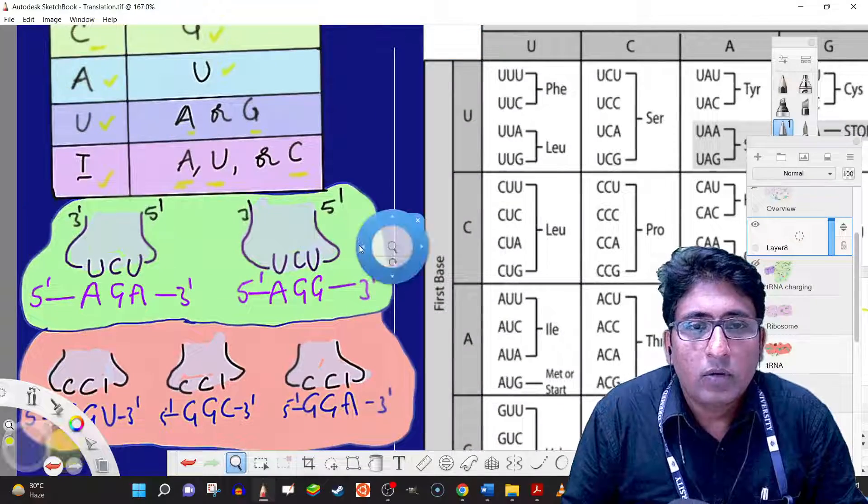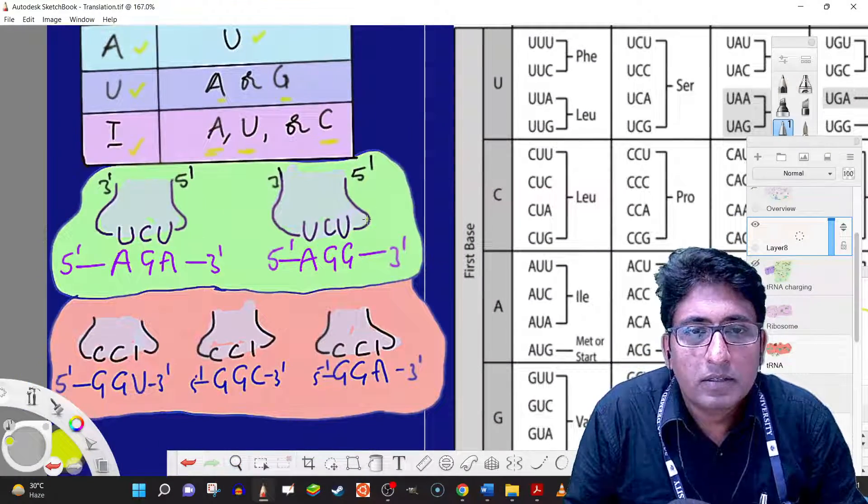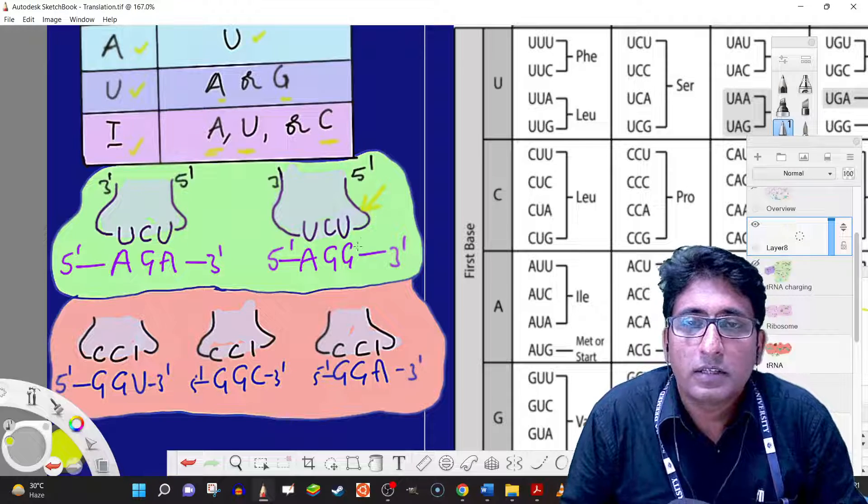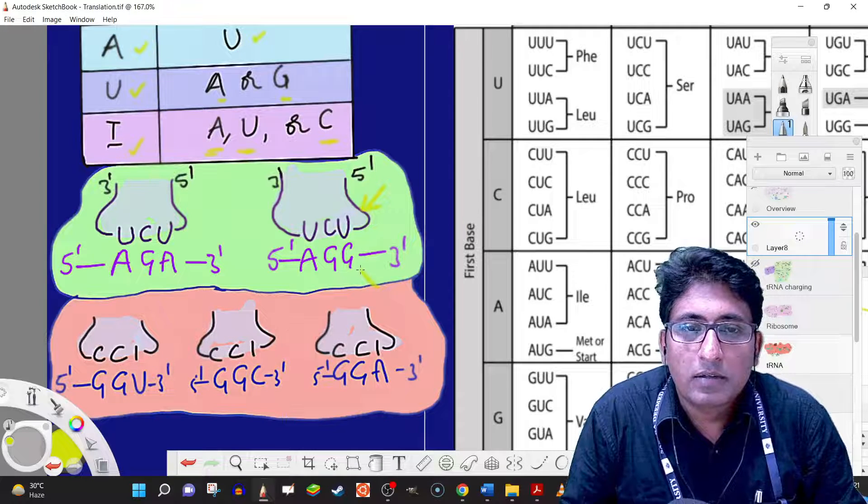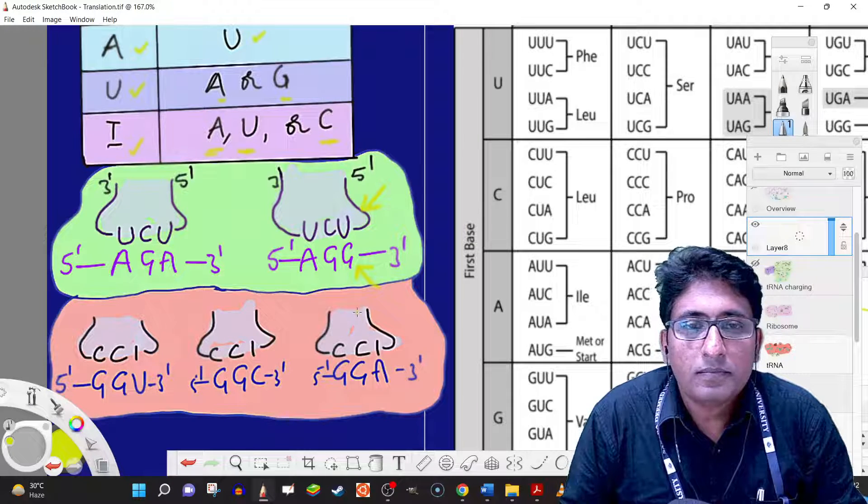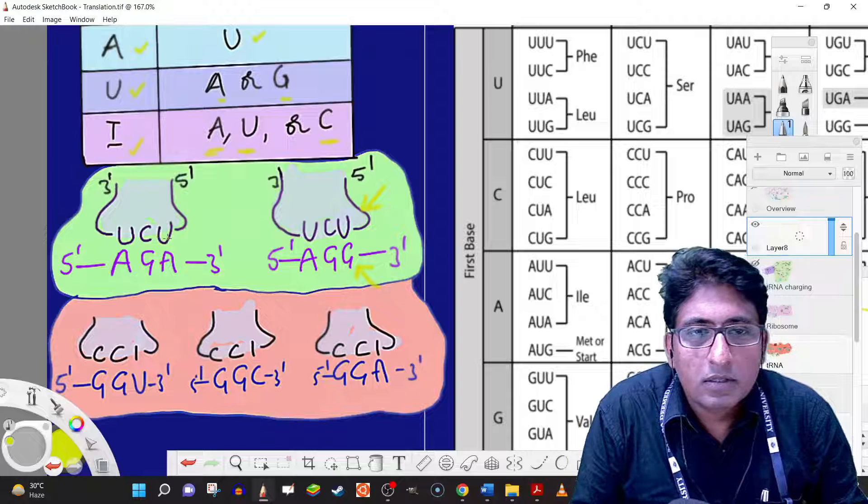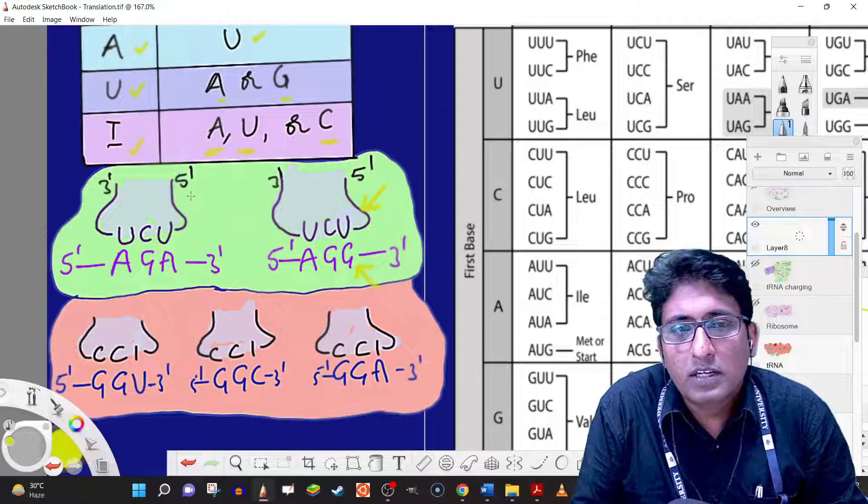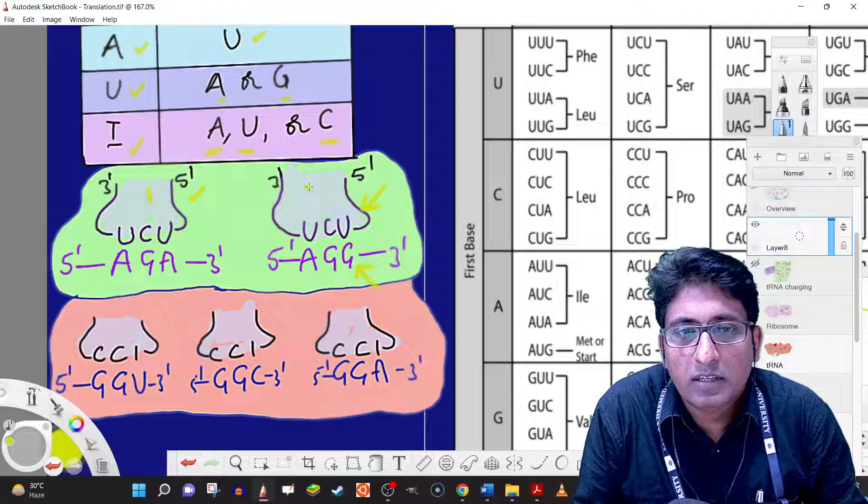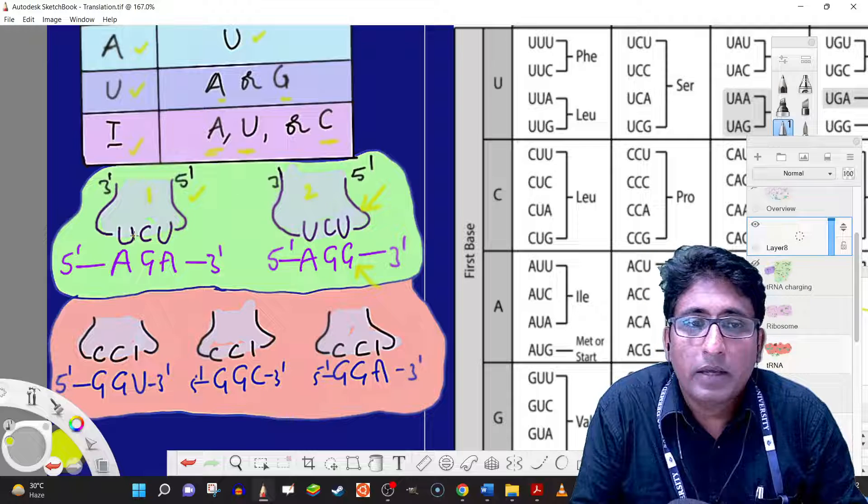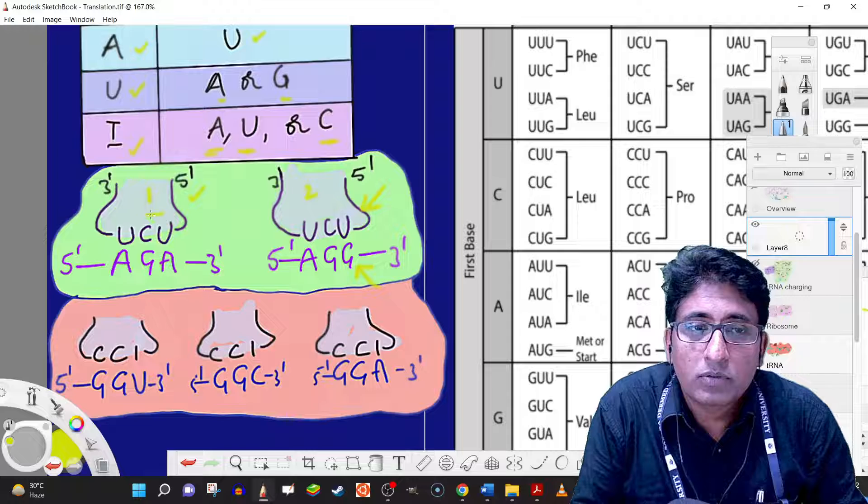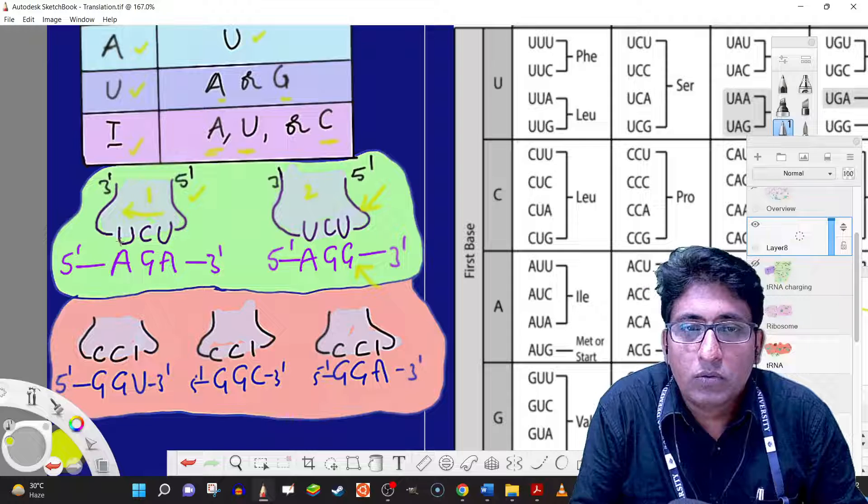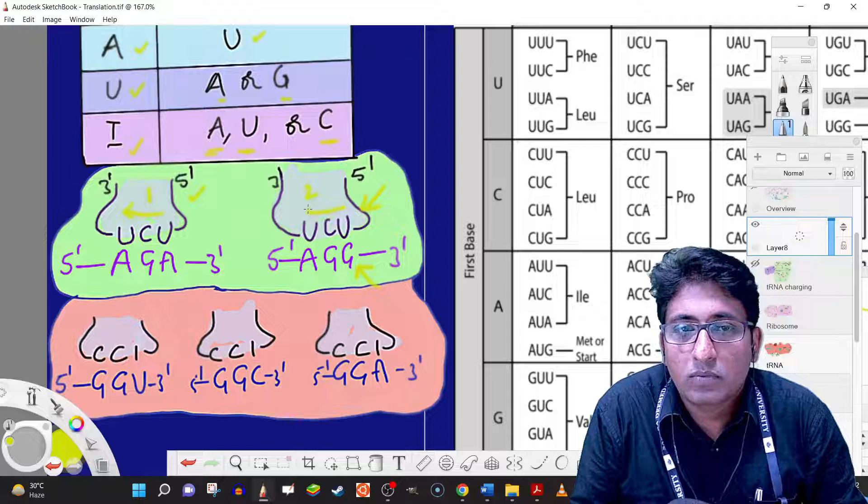If we look at the concept closely, this is the anticodon and here is the codon. The tRNA in both cases, case one and case two, is the same. The anticodon reads 5' to 3' UCU.